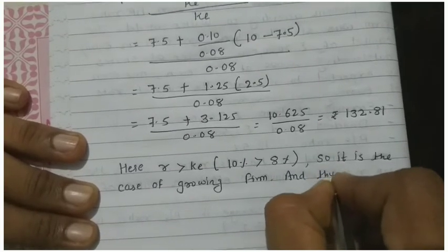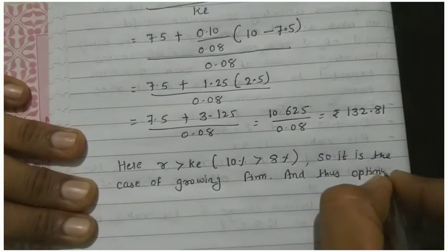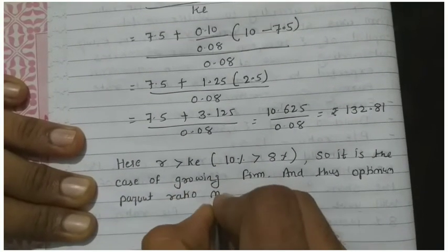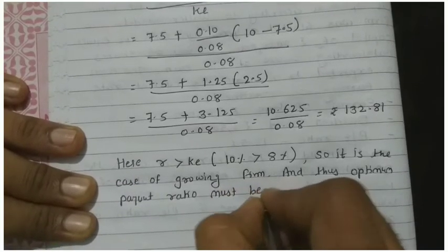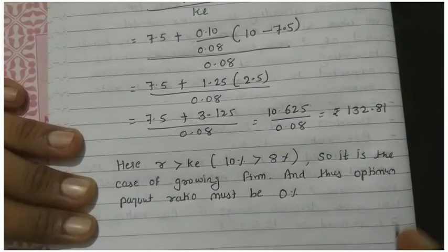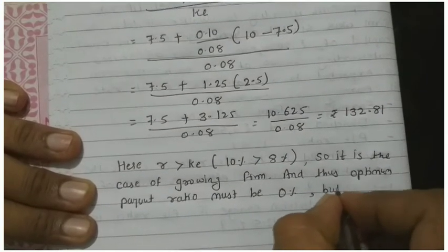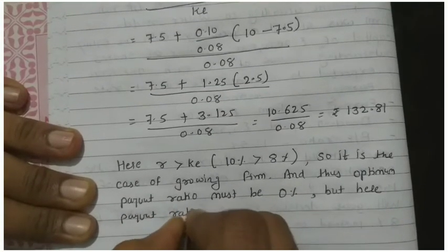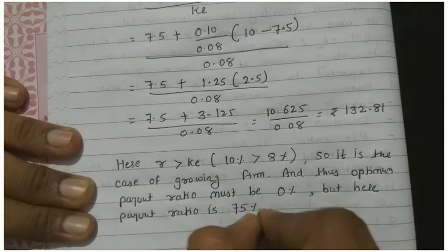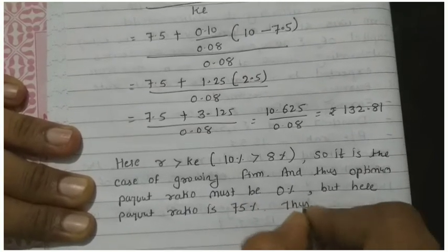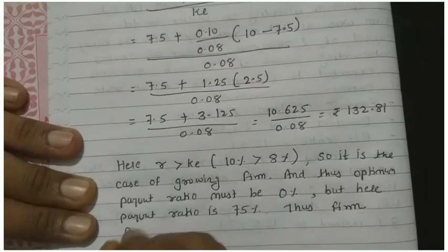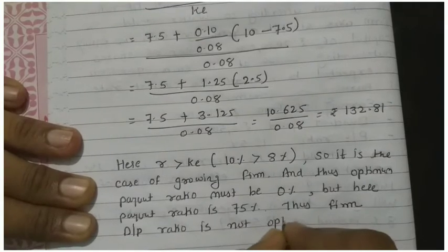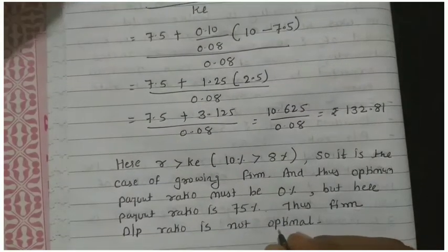It is a case of growing firm and thus optimum payout ratio must be 0%. But here payout ratio is 75%. Thus the firm D/P ratio is not optimal.